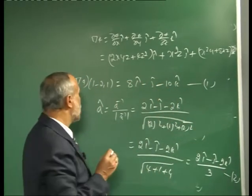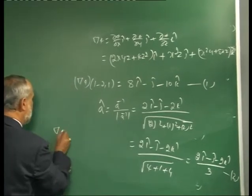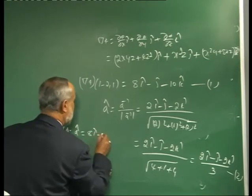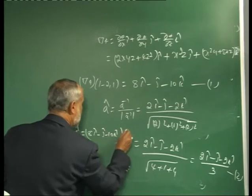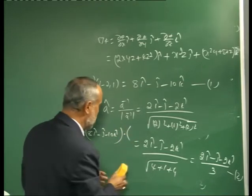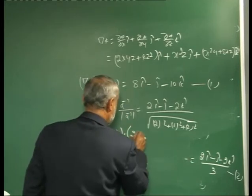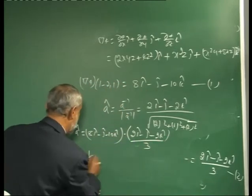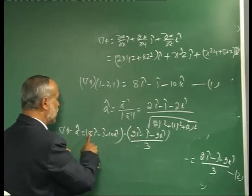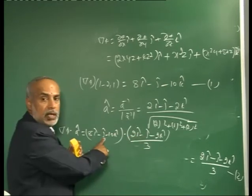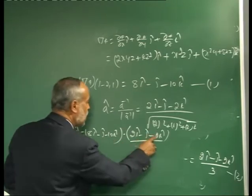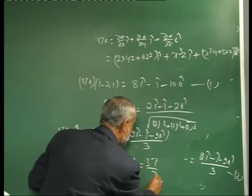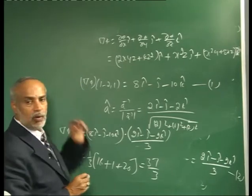Directional derivative = ∇φ · â = (8i - j - 10k)·(2i - j - 2k)/3 = (1/3)(16 + 1 + 20) = 37/3. This is the required directional derivative.